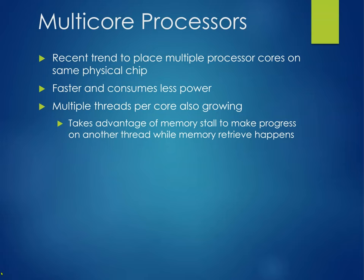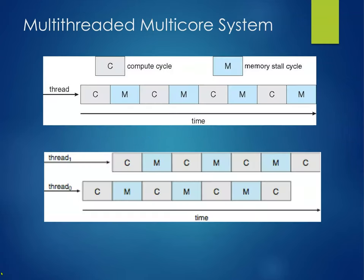Recently, we've moved to more multiprocessor cores on the same physical chip — they're faster and more power efficient. Multiple cores and multiple threads per core is also growing. It takes advantage of a memory stall to make progress on another thread while the memory retrieve happens. A compute cycle and a memory stall cycle can be interleaved so that thread one interleaves with thread two, avoiding wasted time while waiting for memory.